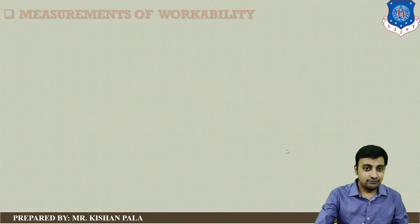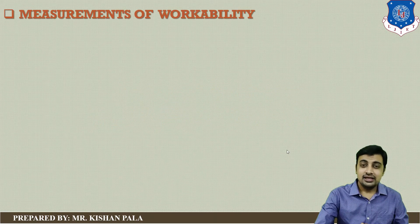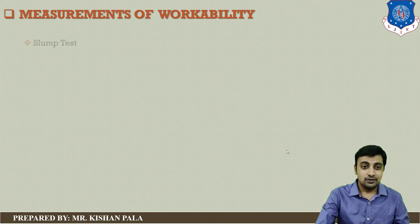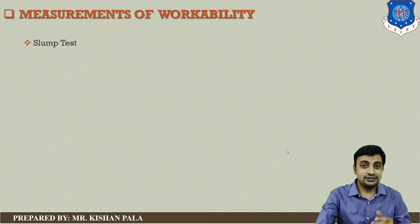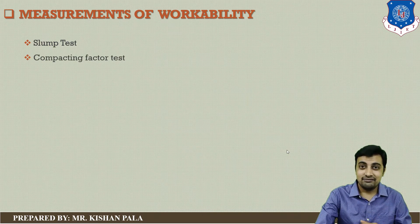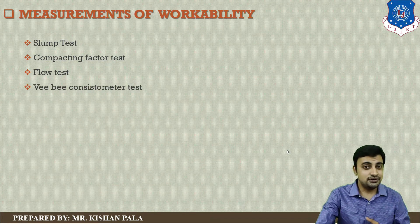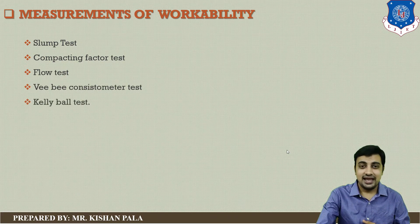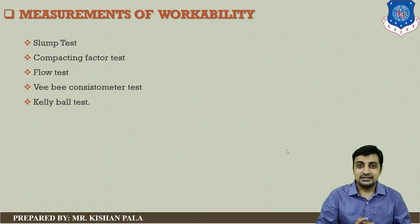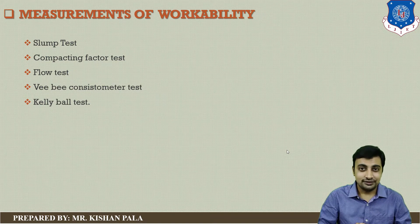In this session, we will find the workability of concrete. As we know, workability can be found with different tests like the slump test, compacting factor test, flow test, VB consistometer test, and caliber test. So these are the five tests available for finding the workability of concrete.